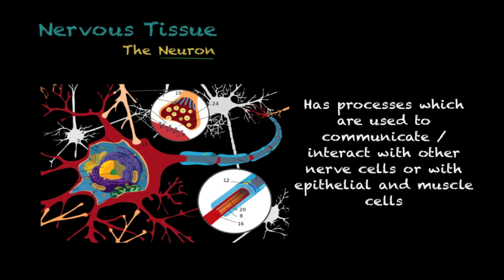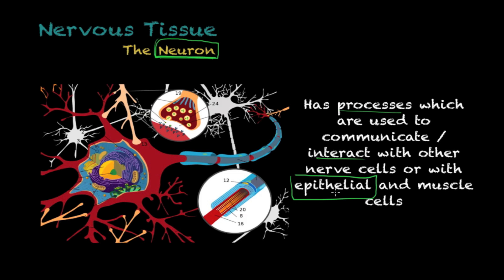I could probably do an entire lecture on the neuron, which is the main cell comprising nervous tissue. But I want to give you just the basics. One of the remarkable things about the neuron is that it has processes used to communicate with other nerve cells, epithelial cells — the cells that cover surfaces like your skin — and muscle cells. These extensions are called dendrites.